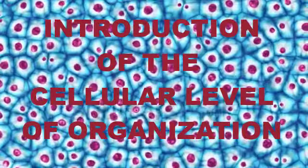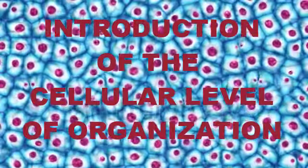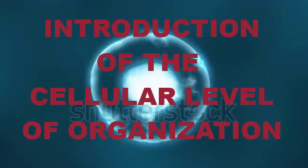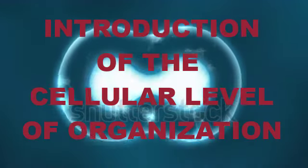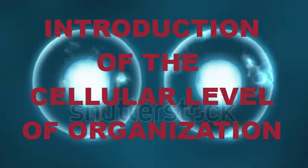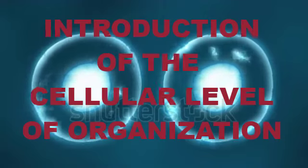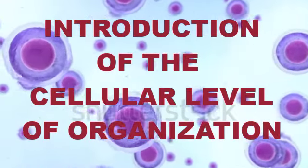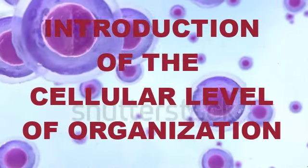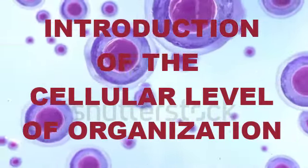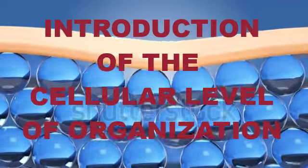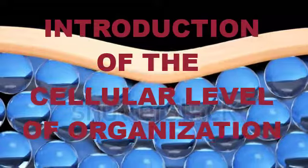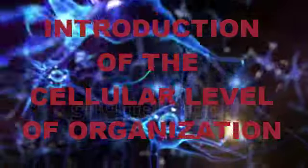Cells are considered the smallest structures capable of maintaining life and reproducing, composed of all living things, from single-celled plants to multi-billion-celled animals. The human body begins as a single, newly fertilized cell. Almost all human cells are microscopic in size. One average size adult body, according to one estimate, consists of 100 trillion cells.